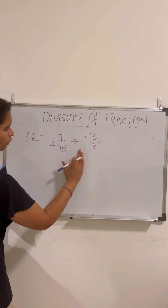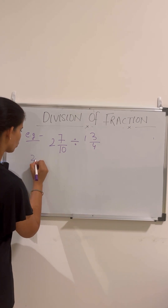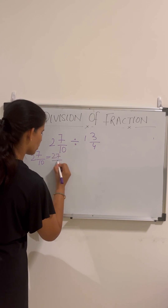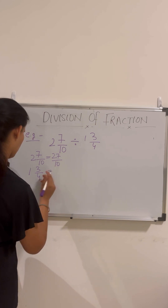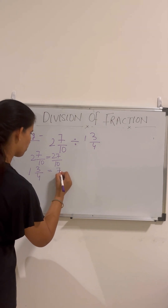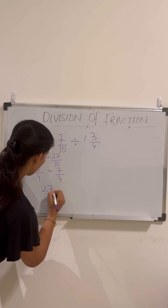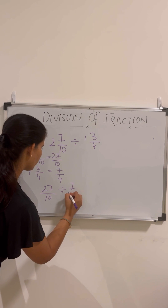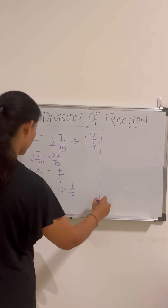The example is 2 and 7/10 divided by 1 and 3/4. First, we convert the mixed fractions: 2 and 7/10 becomes 27/10, and 1 and 3/4 becomes 7/4. We can now rewrite the problem as 27/10 divided by 7/4.